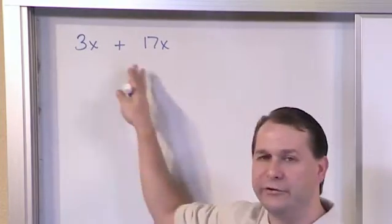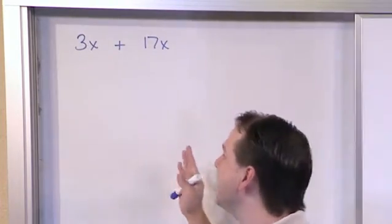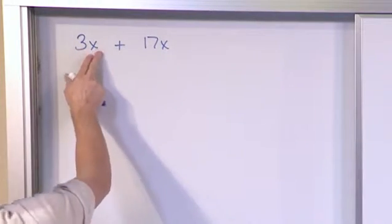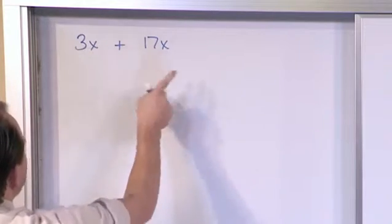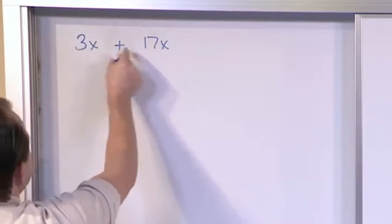Of course, there's no actual equation here. There's no equal sign. But the idea here is that whenever you multiply 3 times x, and here you take 17 times x, in both cases, even though I don't know what x is, x is representing the same thing.